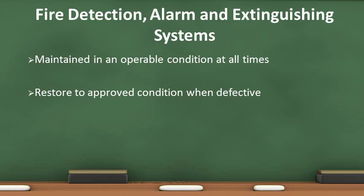The fire code requires that all fire detection, alarm, and extinguishing systems shall be maintained in an operating condition at all times and shall be replaced or repaired whenever defective. The fire code official may require more frequent inspections of certain appliances due to the location where physical damage may occur, such as a commercial kitchen or heavily traveled areas.